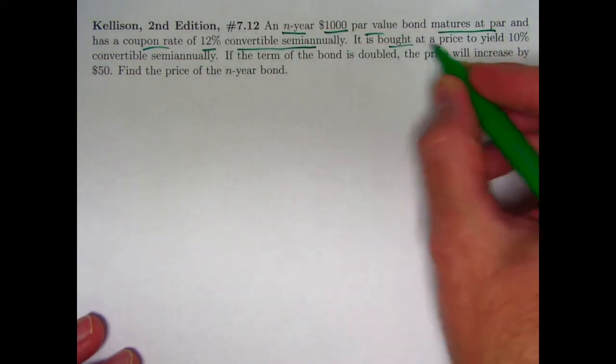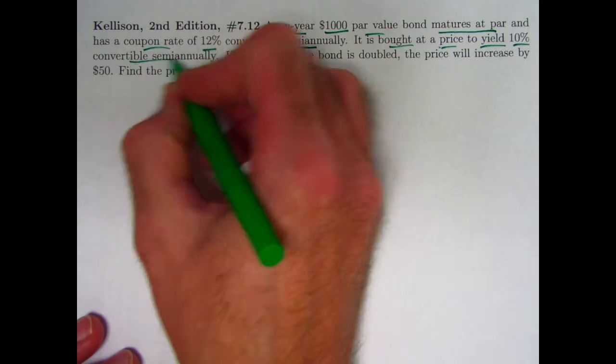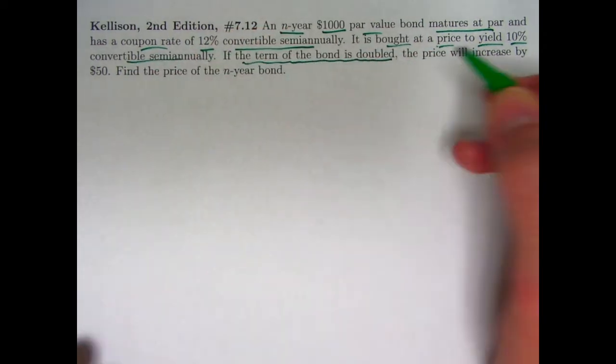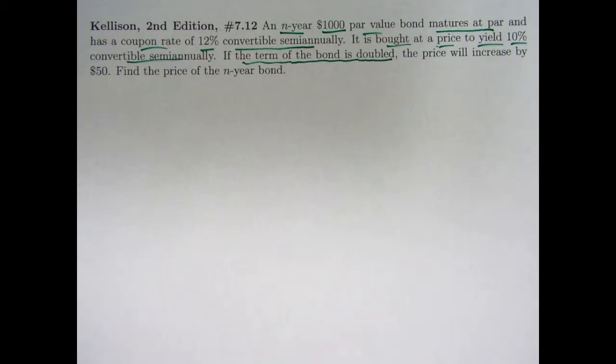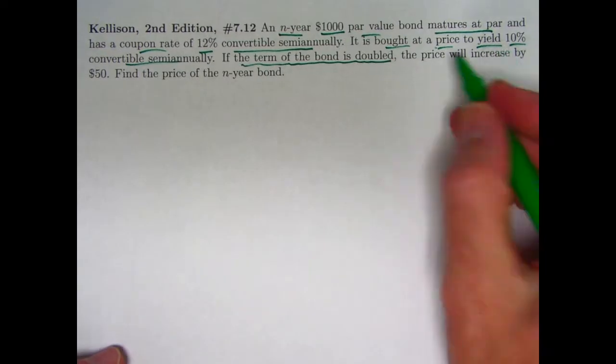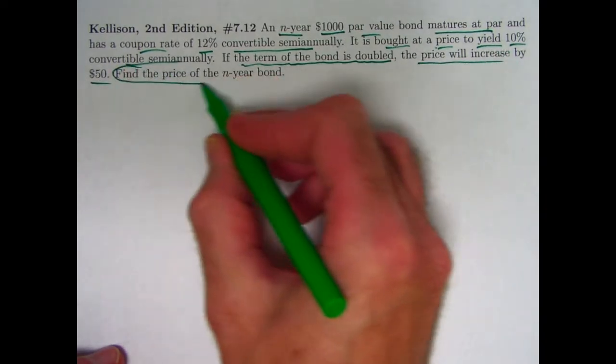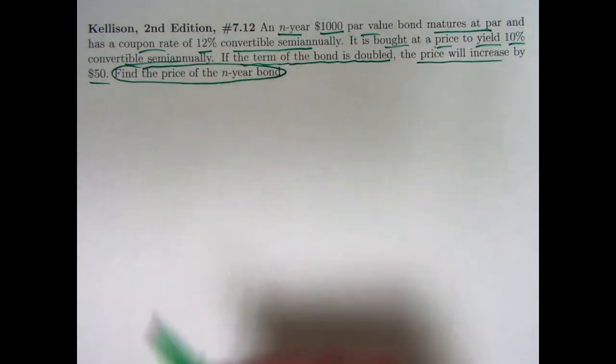It is bought at a price to yield 10% convertible semi-annually. If the term of the bond is doubled to 2n years, meaning the number of coupon payments increases from 2n to 4n, the price will increase by $50. Find the price of the original n-year bond. We don't know n, but we do know how the price changes as the number of coupon payments increases from 2n to 4n.